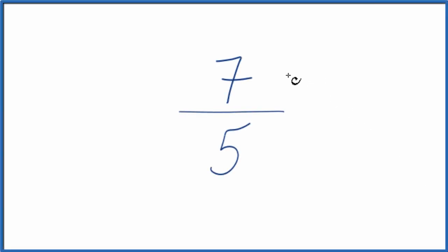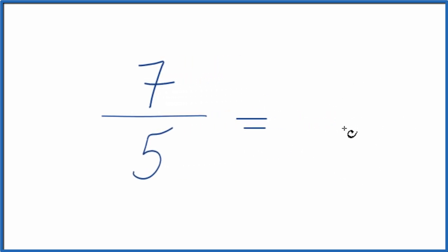If you need to simplify the fraction 7 fifths, here's how you do it. First of all, what we're trying to do is get a fraction that's equivalent. It has the same value as 7 over 5, just that we've simplified or reduced it to lowest terms.